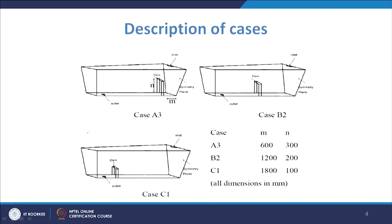As usual, we have these four configurations of tundishes: delta, boat, V, and T shape. We have the use of a dam here, and that dam is kept at three positions — A, B, and C. A1, A2, and A3 are related to the height of the dam, and C is close to the outlet. Here, A3 corresponds to height 300 and A1 to 100.